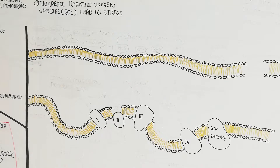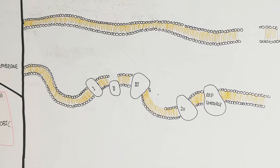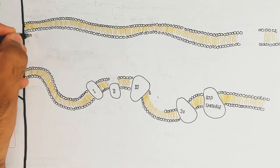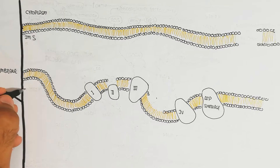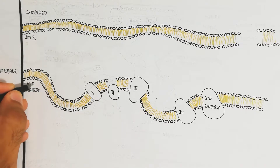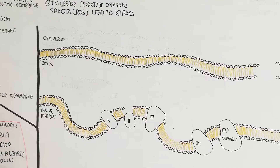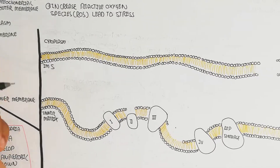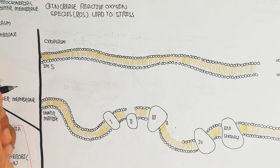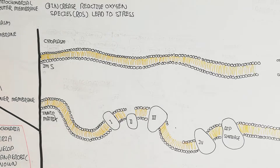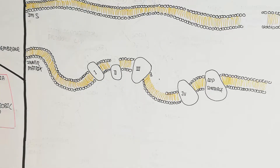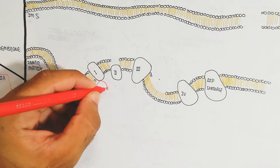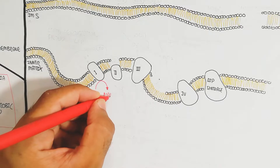Here is a bigger picture of the mitochondria showing the inner membrane, outer membrane, and inner matrix. This is the electron transport chain complex. Here is NADH, which will be converted into NAD+ by the NADH reductase enzyme.